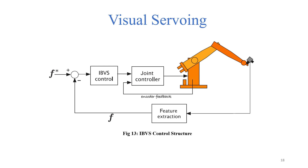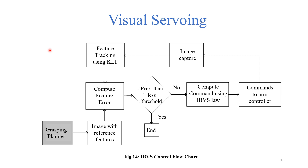We now move to the visual servoing part of the project. Returning to the overall flowchart, we discuss the IBVS control block — an image-based visual servoing controller that utilizes errors in image features. The IBVS flowchart starts with the Grasping Planner, which provides a reference image with features describing the desired grasping position. These are compared against features tracked and extracted from the current image using the KLT algorithm to produce the feature error vector. If the magnitude is below a threshold, the task ends; otherwise, a velocity command is computed using the IBVS control law and sent to the lower-level actuators.